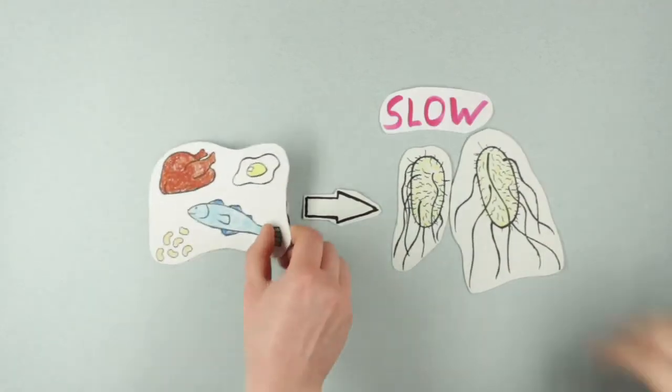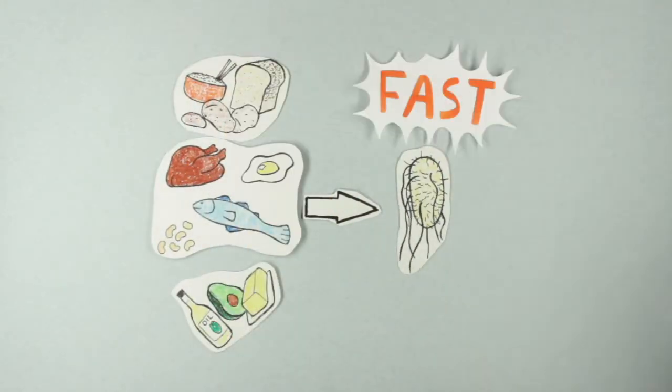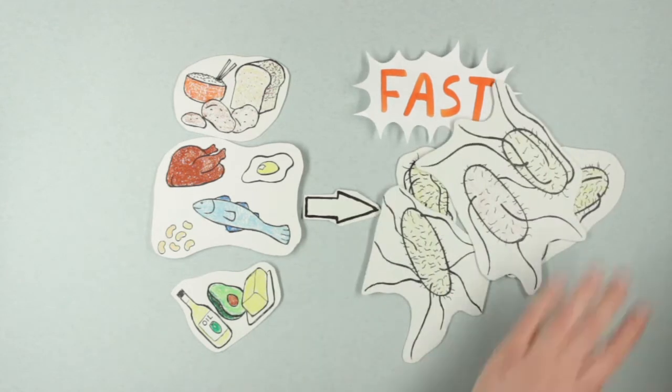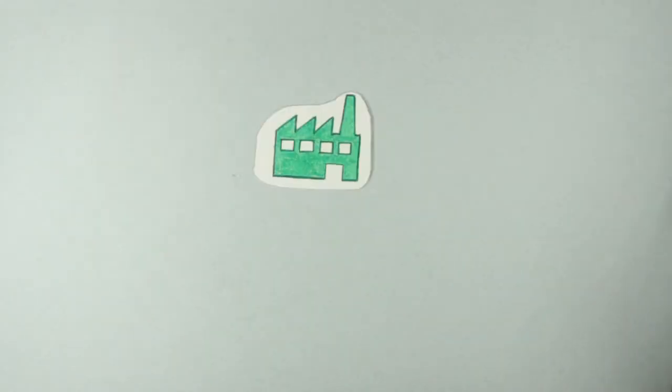So bacteria grow faster or slower depending on what building blocks are given to them. But how do they do this? You can think of it this way.